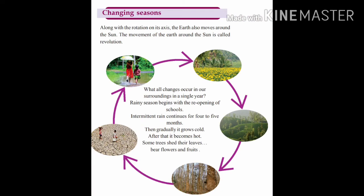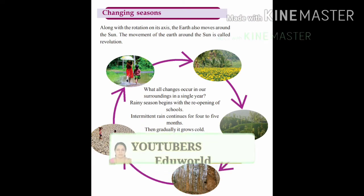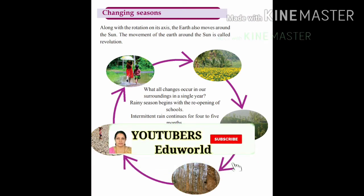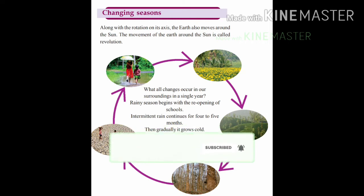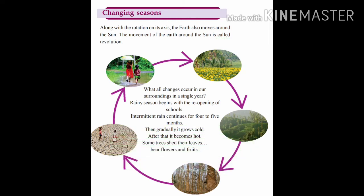Now let's learn about another movement of the earth. Along with the rotation on its own axis, the earth also moves around the sun. The movement of the earth around the sun on a fixed path is called revolution.